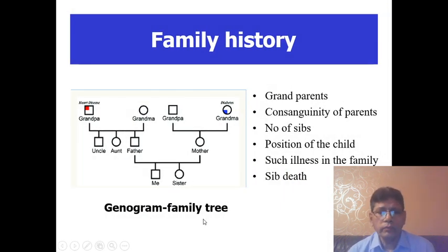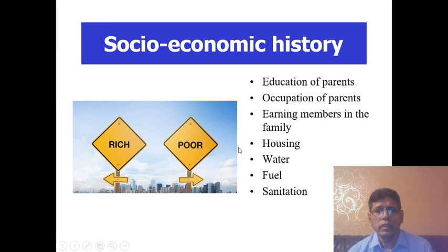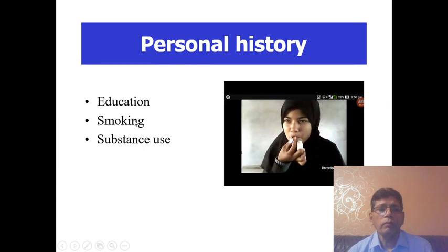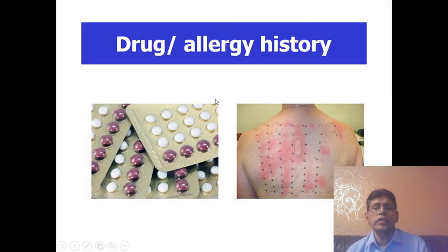Family history: a genogram — that is, a family tree — is important. Include grandparents, consanguinity of parents, number of siblings, position of the child, similar illness in the family, and sibling deaths. Socioeconomic history covers economic status, education and occupation of parents, earning members, housing, water, fuel, and sanitation. Personal history covers education, schooling, and smoking or substance use. Environmental history covers pollution around the house, smokers in the family, ventilation, and mode of traveling. Drug history and allergy history are also important.